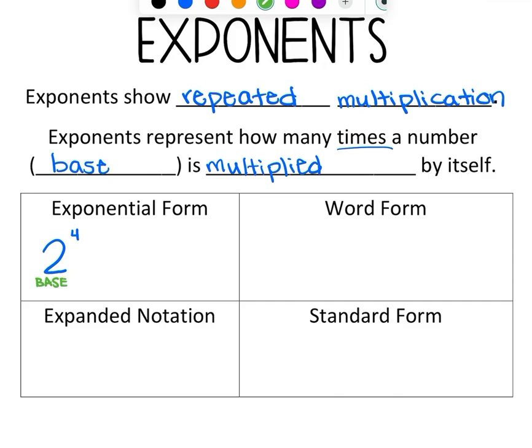And then the little number, the small 4 up here, is actually called the exponent. So this is what it means by exponential form. We have a base and an exponent.